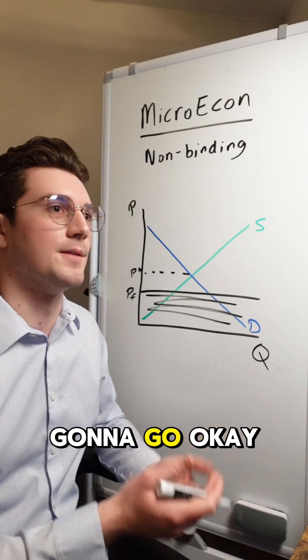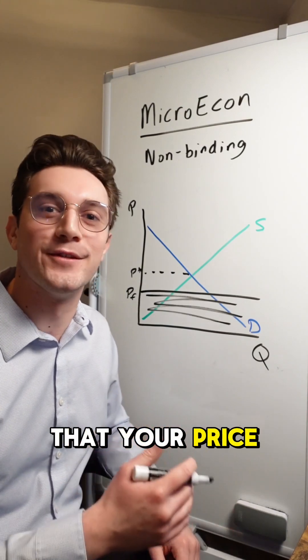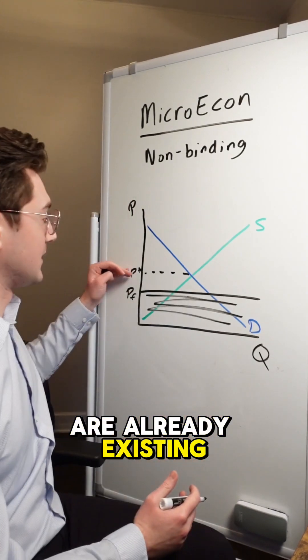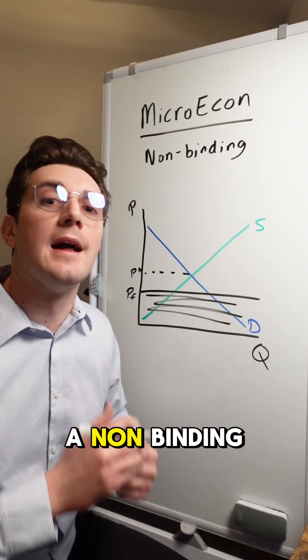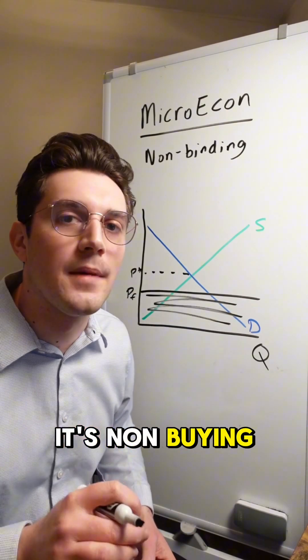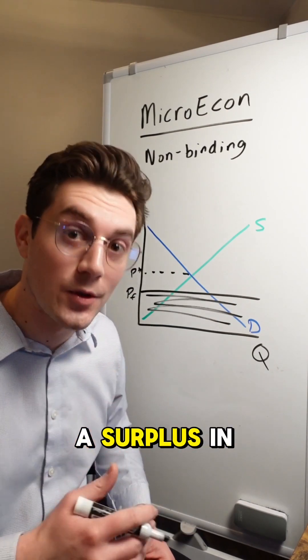So consumers and producers are just going to go, okay, cool, we don't care that your price floor is below our already existing equilibrium price. And in turn, this would be a non-binding price floor. It's non-binding because it's not causing a surplus in this market.